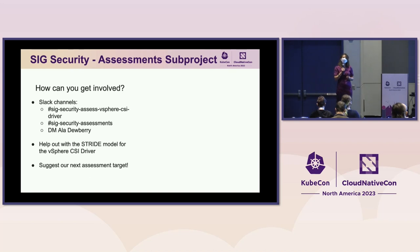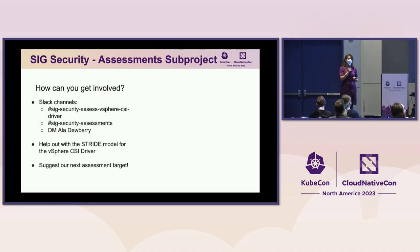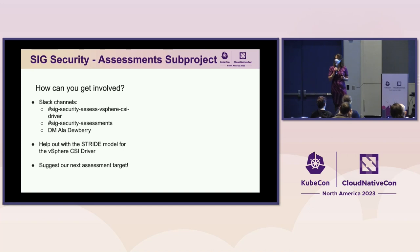A threat model is a living artifact that should be continuously reviewed as that piece of the project evolves. To get involved, you can hop into the Slack channels for the self-assessment subproject or for the vSphere CSI driver, or shoot me a DM. This is actually a call for help — if you have any threat modeling experience and want to help with the vSphere CSI driver threat model, we would love for you to participate. We are also always looking for targets for our next threat model, so if you have ideas for other parts of the project, we'd love to hear from you.